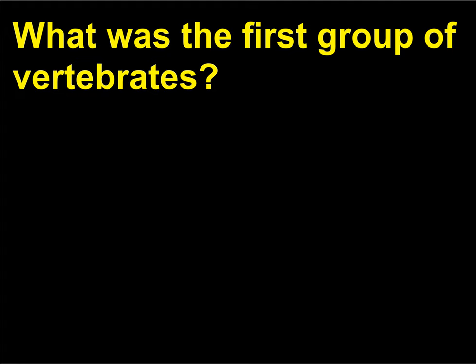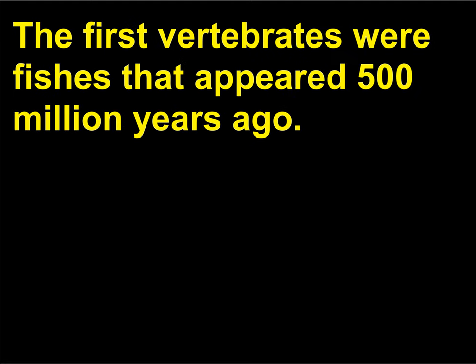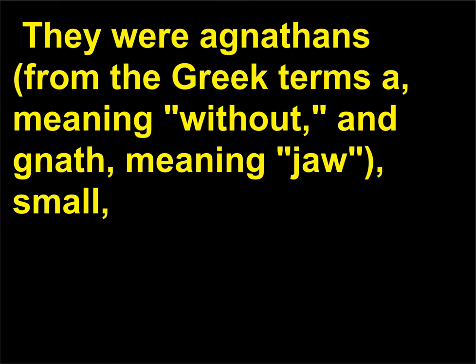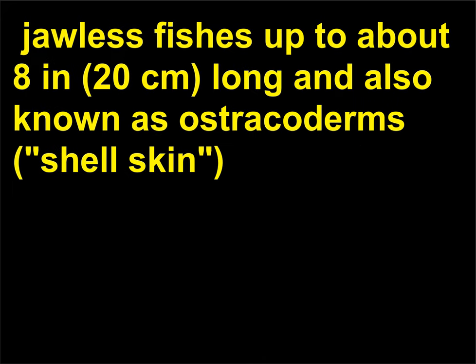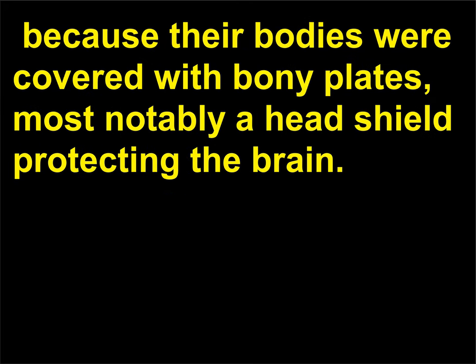What was the first group of vertebrates? The first vertebrates were fishes that appeared 500 million years ago. They were agnathans, from the Greek terms a, meaning without, and gnath, meaning jaw — small, jawless fishes up to about 8 inches (20 cm) long, also known as ostracoderms, shell skin, because their bodies were covered with bony plates, most notably a head shield protecting the brain.